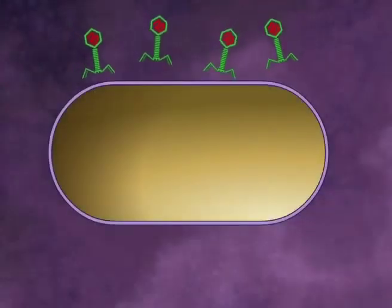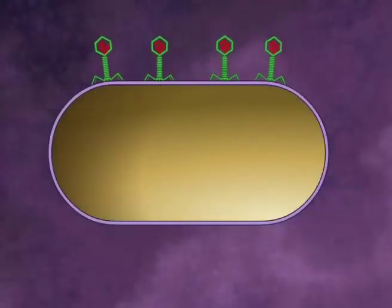When the phage infected the bacteria, the P32 labeled DNA entered the cell and could be found in phage subsequently produced in the infected bacteria.